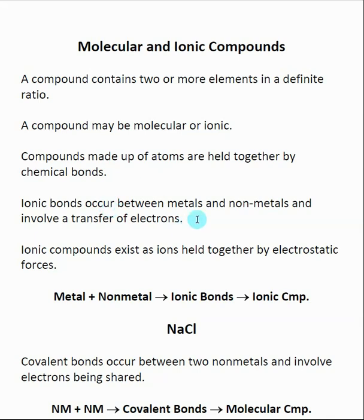Ionic bonds occur between a metal and a nonmetal, relative to their position on the periodic table. Ionic bonds involve the transfer of electrons. When I see a metal and nonmetal combined in a compound, it's typically going to contain ionic bonds and be an ionic compound. When the electron transfers, we end up making a positively charged species and a negatively charged species, and those two are held together by electrostatic forces — that's what we call an ionic bond.